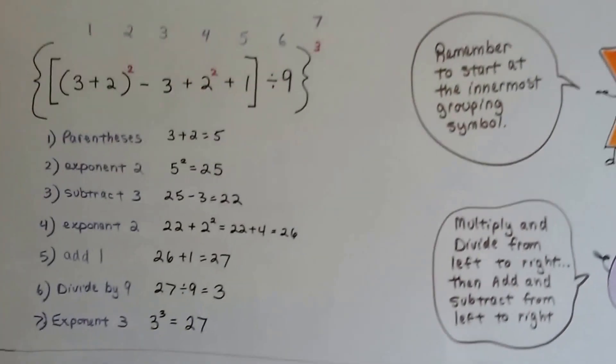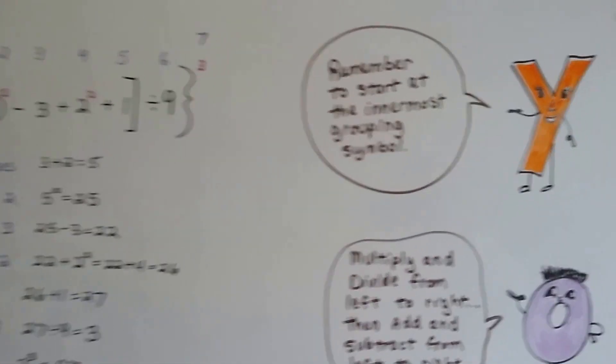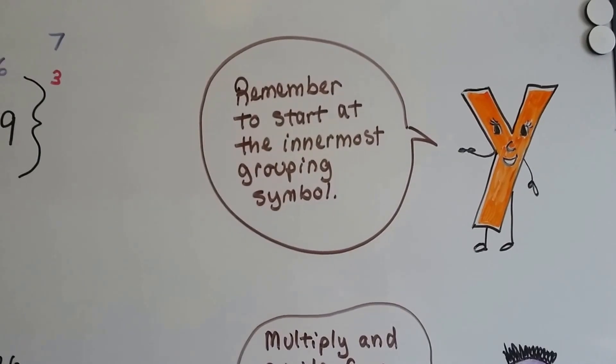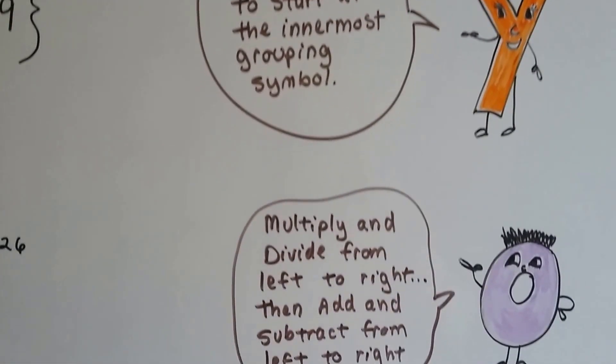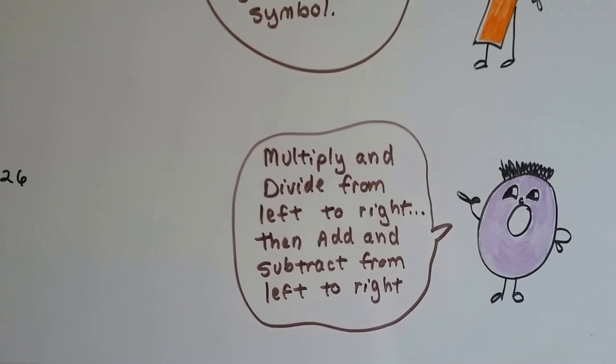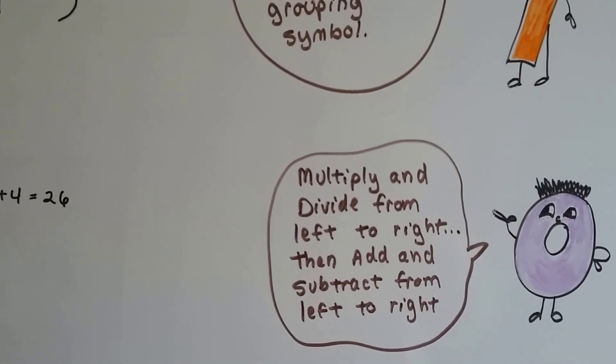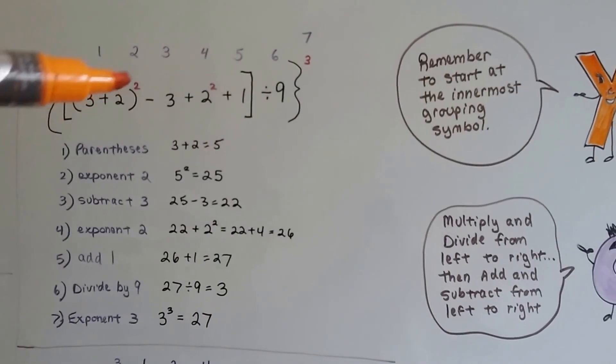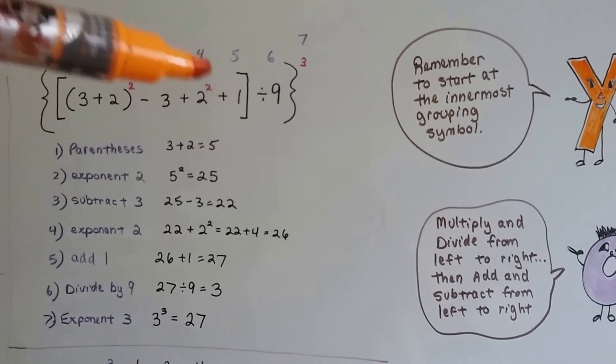So to remember, just remember to start at the innermost grouping symbol, the very inside one, and multiply and divide from left to right, and add and subtract from left to right, and do the exponents as needed. So if you have exponents here, then do that one, do this one, and this one is going to end up being last.